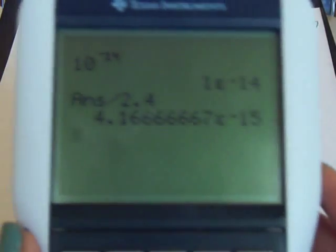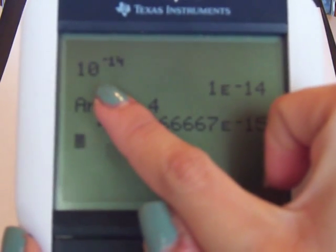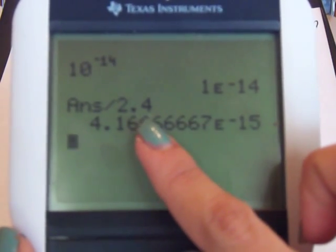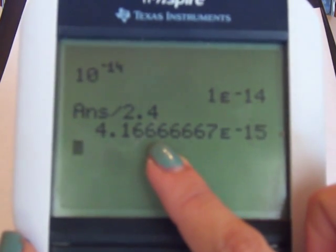Once we plug it in, that's our value. Here we have the 10 to the negative 14, and then we divided by 2.4, the concentration. That would be our concentration for the OH ions.